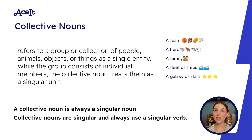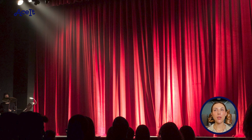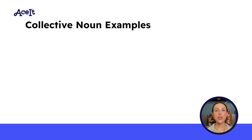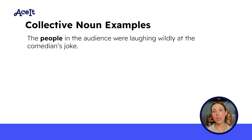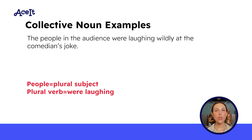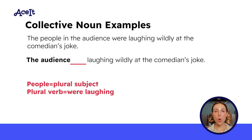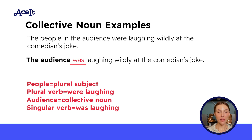Our second rule for today is that if your subject is a collective noun, then your verb must be singular. For example, let's say you and your friends get tickets to see your favorite comedian perform, and every single person in the audience is just laughing. You could say, 'The people in the audience were laughing wildly at the comedian's joke.' Here, the subject is 'the people,' which is plural, so we have a plural verb, 'were laughing.' But if we refer to all those people as 'the audience,' then the audience is a collective noun and we need a singular verb: 'The audience was laughing wildly at the comedian's joke.'